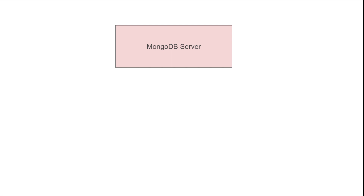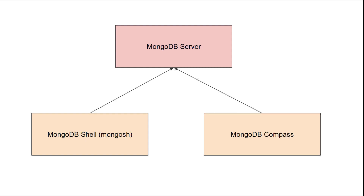The first thing is the MongoDB server. We will be needing a MongoDB server wherein we will have a copy of our database running locally, and we will need a way to access this database. There are two ways in which you can access or connect to the database.